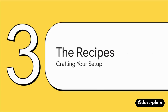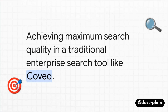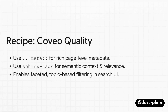So we've seen what each tool does best. Now for the fun part — let's build some practical, actionable recipes. We'll take a few really common goals and figure out the ideal tool stack for each one. Let's start with a classic goal: getting the absolute best search quality out of a traditional enterprise search tool like Covio. For this, you really want a combination. Use the meta-directive for page-level descriptions and keywords to give the search engine really rich metadata, then add Sphinx Tags on top to provide semantic context, which improves relevance and lets you do topic-based filtering in your search results.